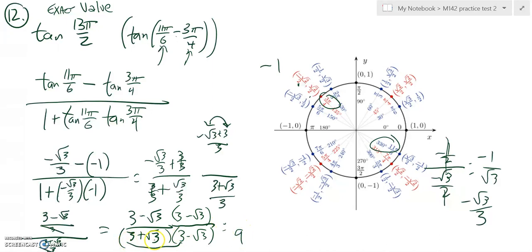This times this. This is 9. Root 3 times negative root 3 is negative 3. 9 minus 3. Notice the middle term drops out. 3 root 3, negative 3 root 3, which we want to happen.